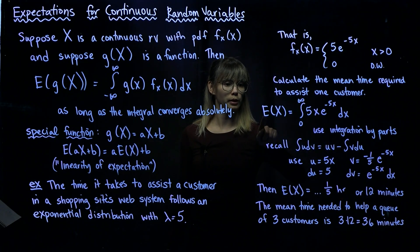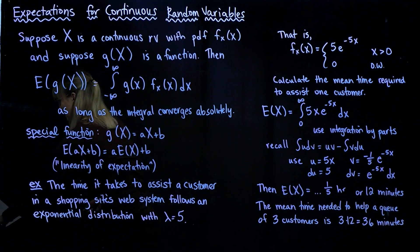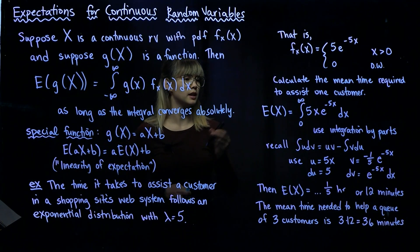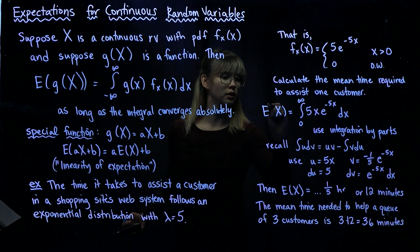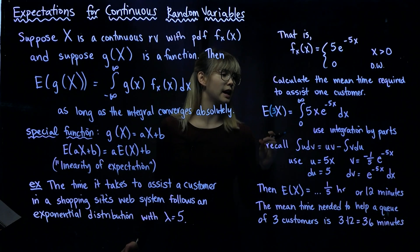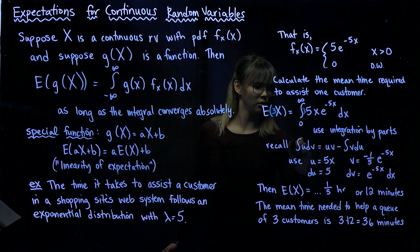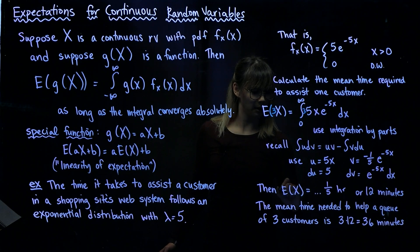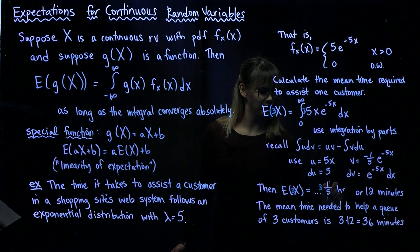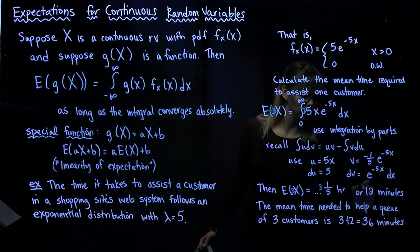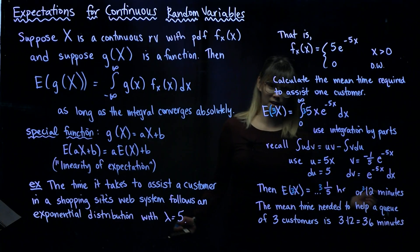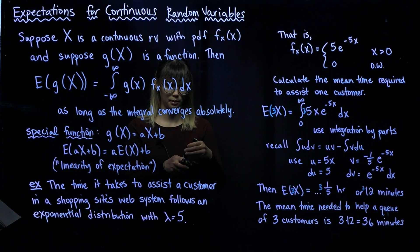If we want, we could have gone through this whole thing again with the expected value of 3X. We would have 3 times 5, and then the expected value of 3X is equal to 3 times 1/5 hours, or 3 times 12 minutes, and that gives us 36 minutes.